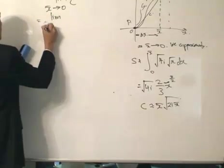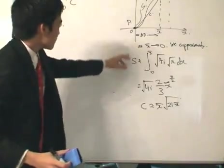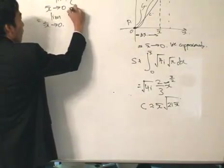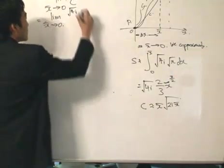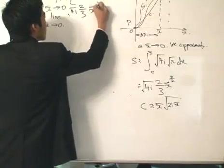Of s, which is this one here, root 4i, 2 over 3, and x dash 3 over 2, over this one over here.